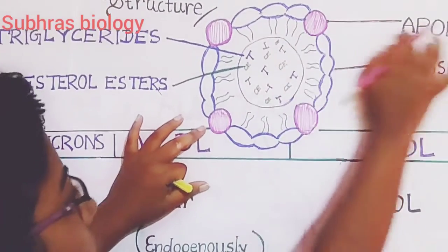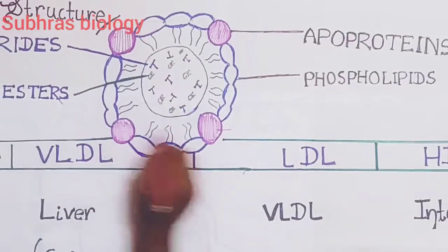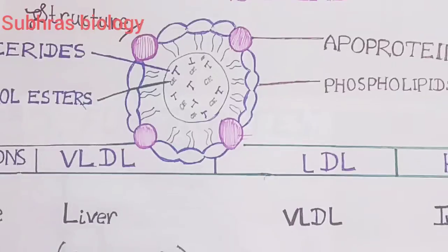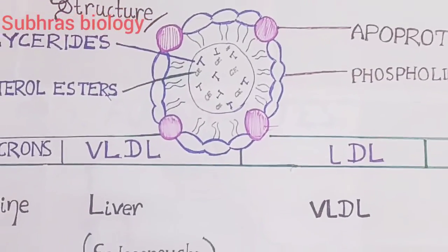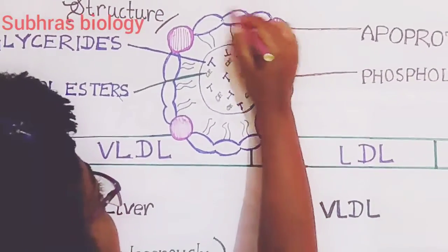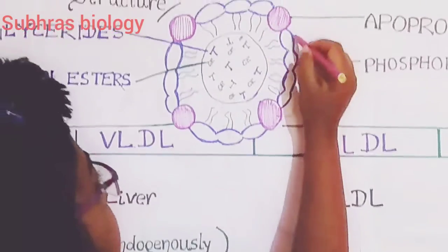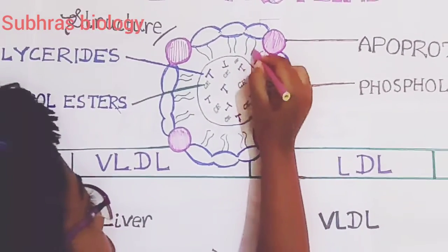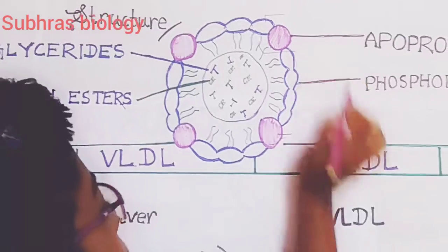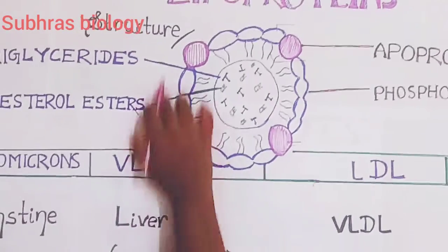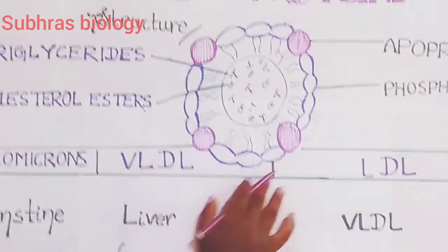But in the outside, you can see these are called the apoproteins. These pink balloon-like structures are called the apoproteins. Apoproteins are the proteins that don't get attached with the lipids — they are called apoproteins. And this blue lining is called the phospholipid layer. These are the polar head of the phospholipid layer, and these are the polar tail of the phospholipid layer.